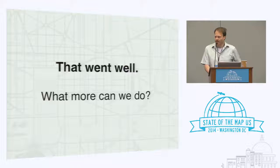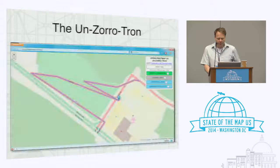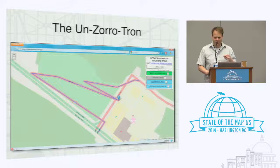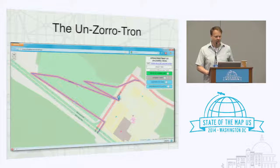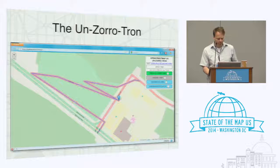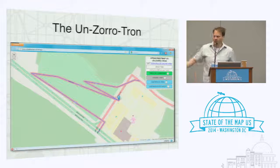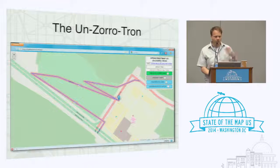So what else can we do with this idea? At StateOfTheMap in Portland I presented the Unzorotron — and naming things is one of the things I'm not very good at. If someone here is a user interface designer or is particularly good at those things, we'd love for them to have a look at MapRoulette and see how it can look and work better. The Unzorotron dealt with Zorro ways — those are almost always wrong — and we fixed those within a matter of weeks as well.